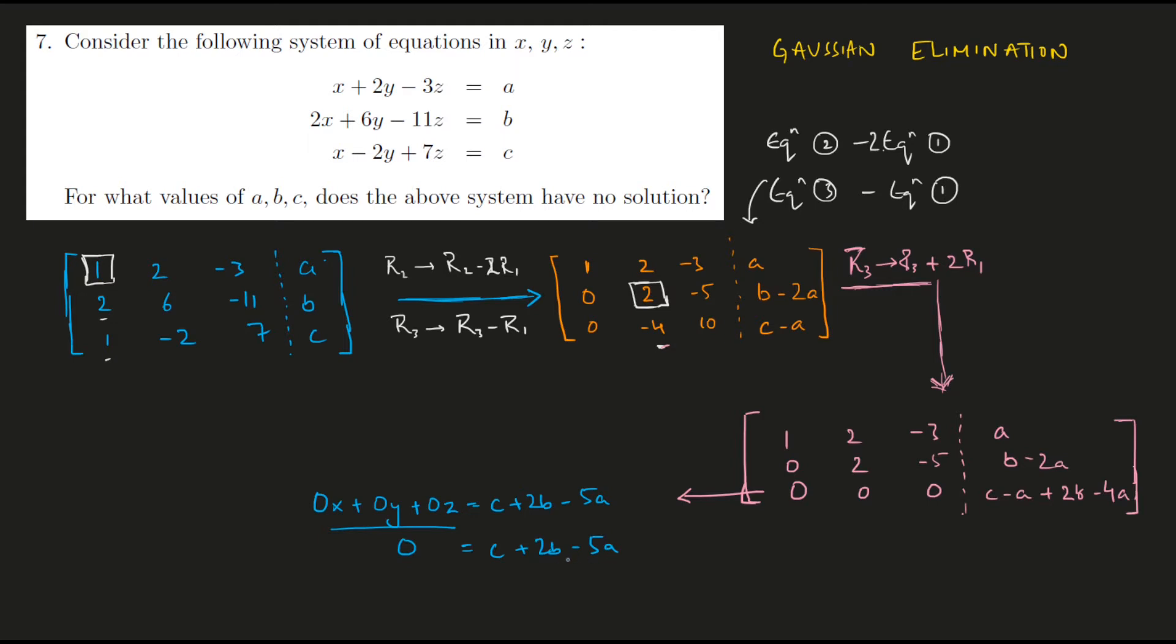Now if I were to choose A, B and C such that this expression turns out to 0, then we could have a solution to the system. But if this expression turns out to be not equal to 0, then we would have 0 equal to something that is non-zero, and this would render the entire system unsolvable. So we won't have a solution in that case. Because of this we have our answer as option A.